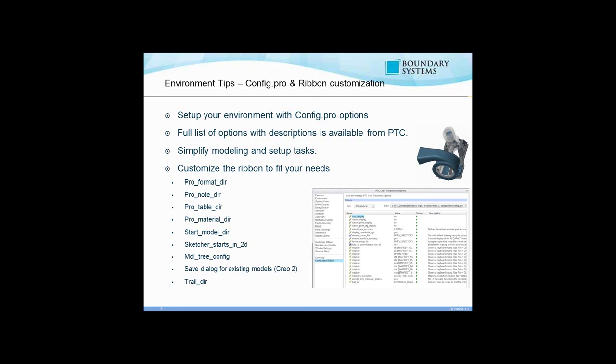PTC always releases a document with every date code and every release of the software listing every single config.pro option you can use in Creo Parametric and all its extensions. It also lists the name, description, and possible values for each option. You can scroll through that and find options that look beneficial, set them to a particular value, and doing that helps simplify your modeling and set of tasks.